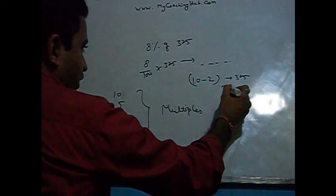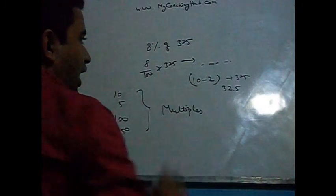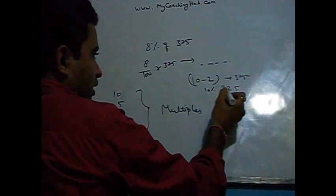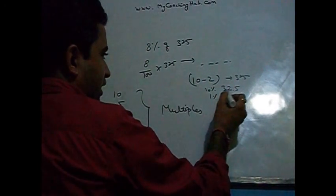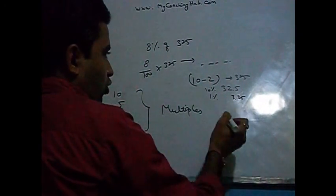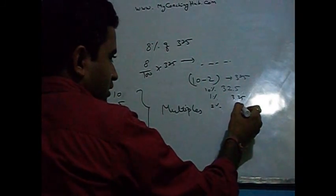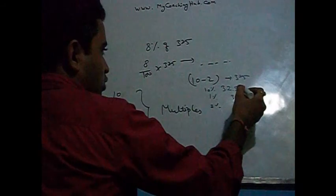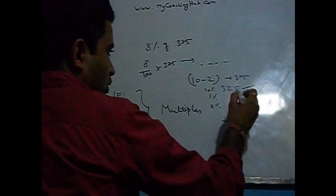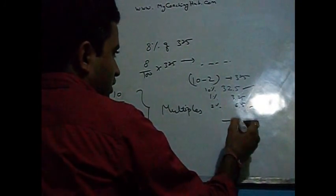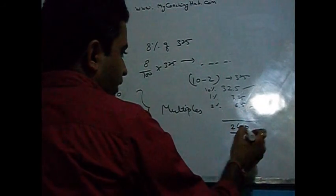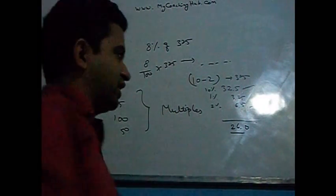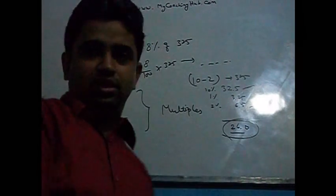8% of 325 means we do 10% minus 2% of 325. 10% of 325 is 32.5. 1% is 3.25, so 2% is 6.5. Since 8 is 10 minus 2, we get 32.5 minus 6.5 which equals 26. This is how easily you can find 8% of 325.